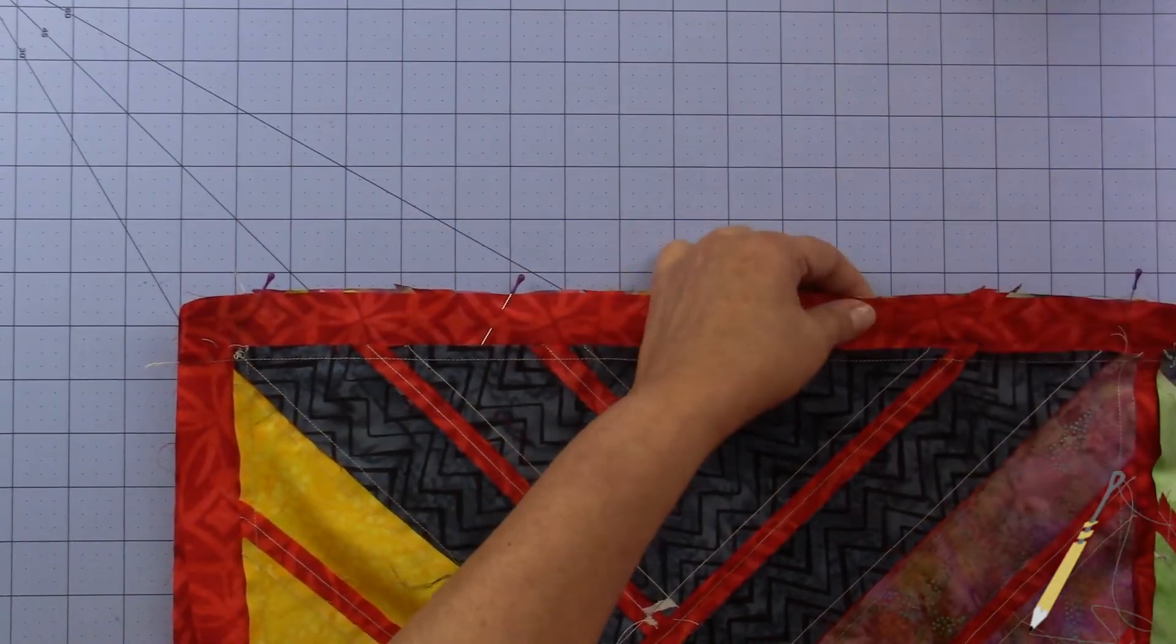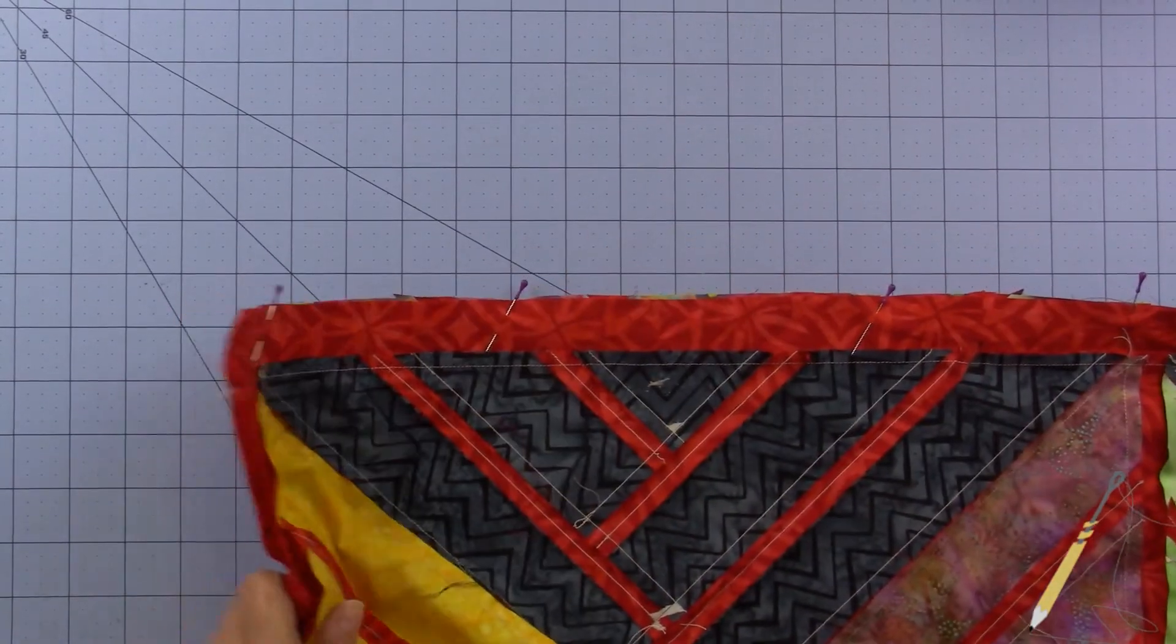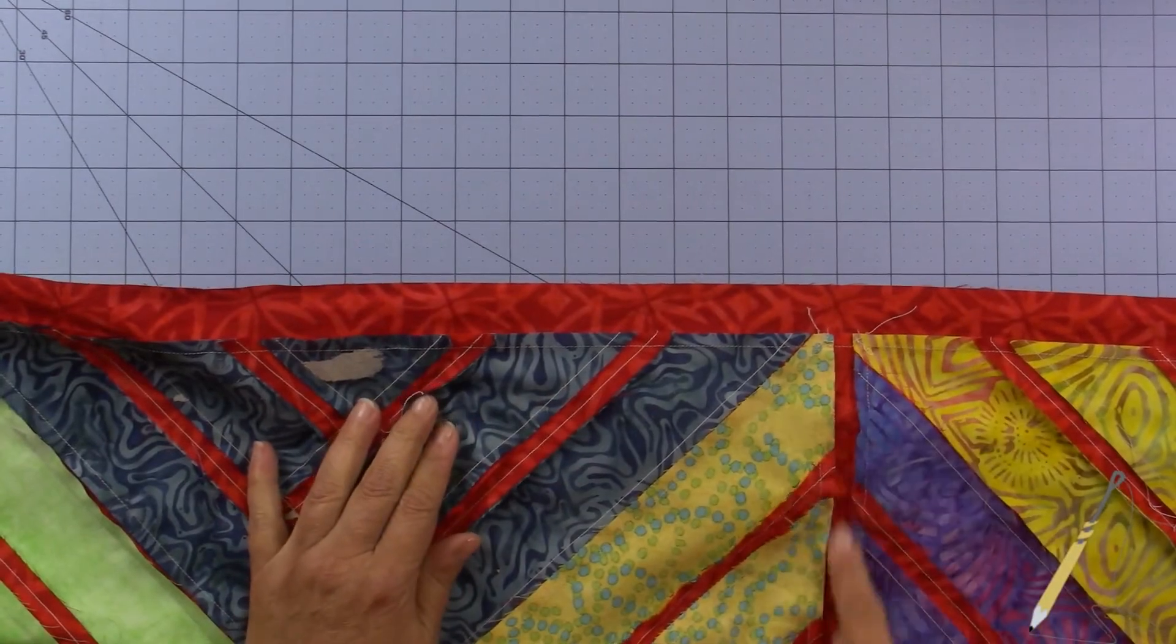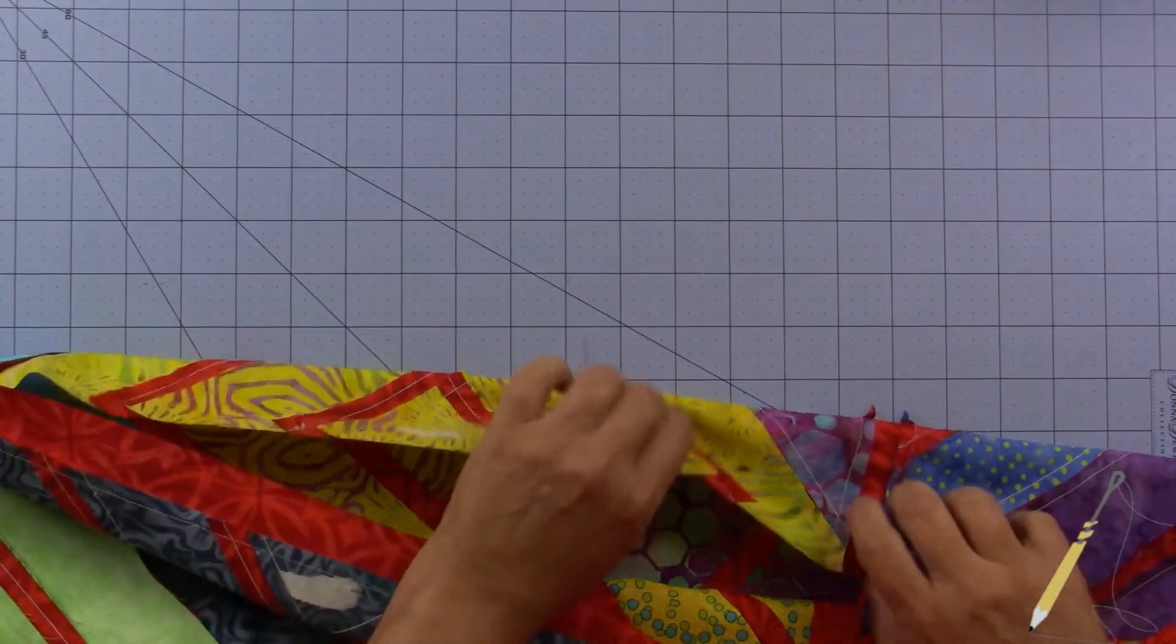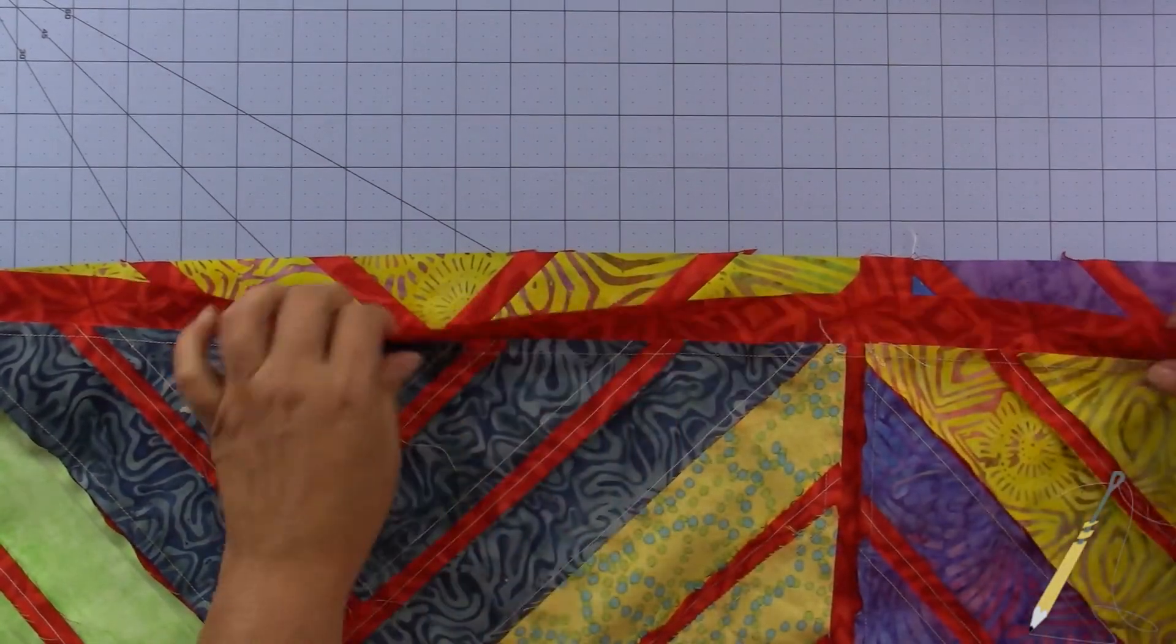Then you'll just go down to the next section, which would be here, this one that we want to match, and mark it the same way.